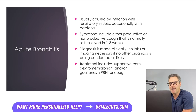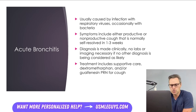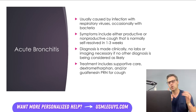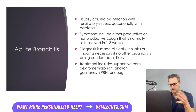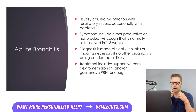Next up is acute bronchitis. This is usually caused by infections with a respiratory virus or occasionally bacteria, causing acute inflammation of the bronchi. Symptoms include either a productive or non-productive cough that normally self-resolves within one to three weeks. Diagnosis is clinical — no labs or imaging needed unless another diagnosis is being considered. Treatment is supportive care; we can give dextromethorphan and/or guaifenesin as needed for sputum production.